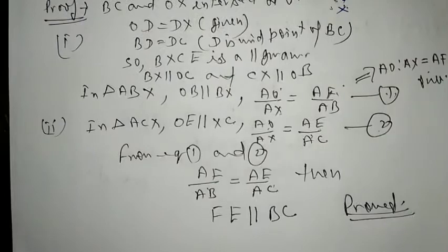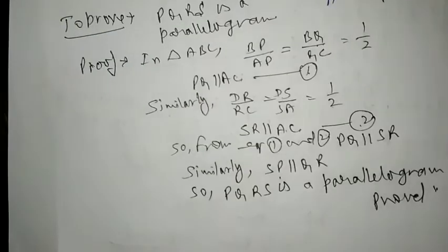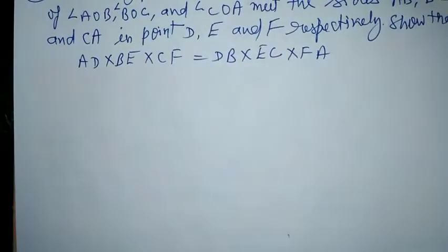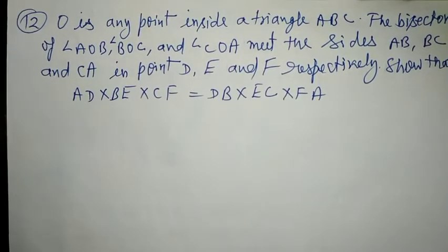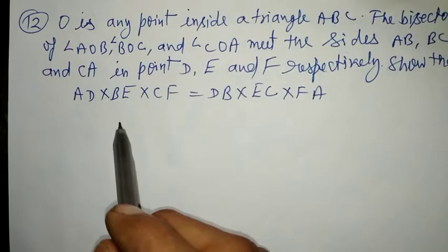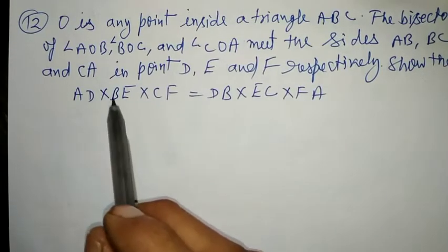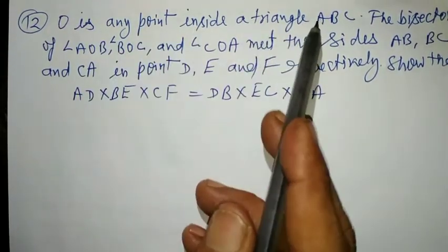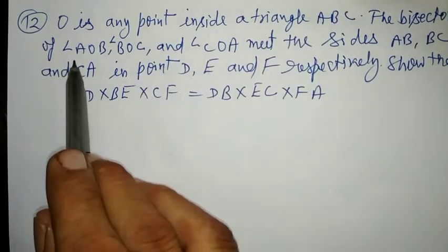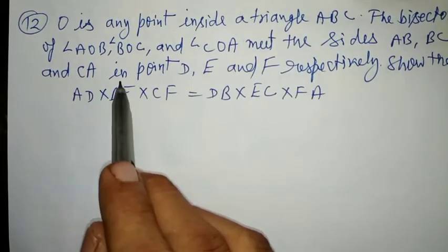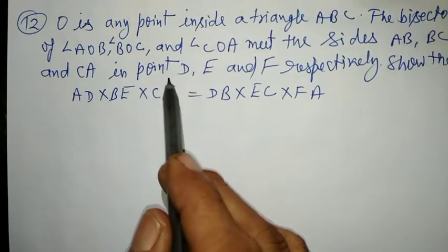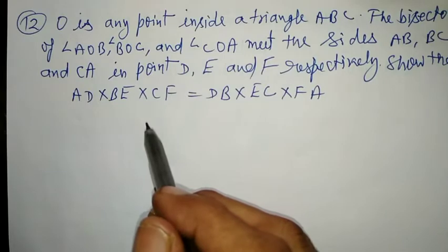Next, question number 12. O is any point inside triangle ABC. The bisectors of angles AOB, BOC, and COA meet sides AB, BC, CA at points D, E, F respectively.